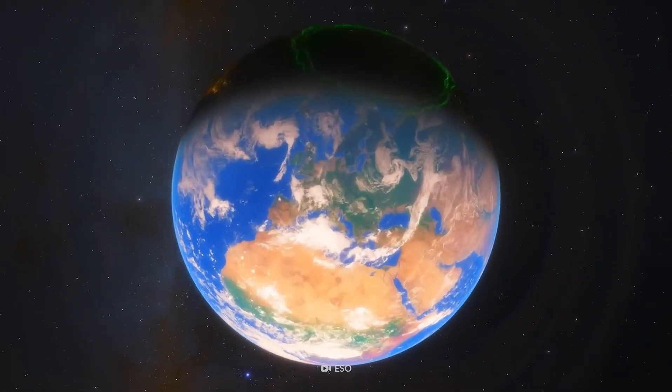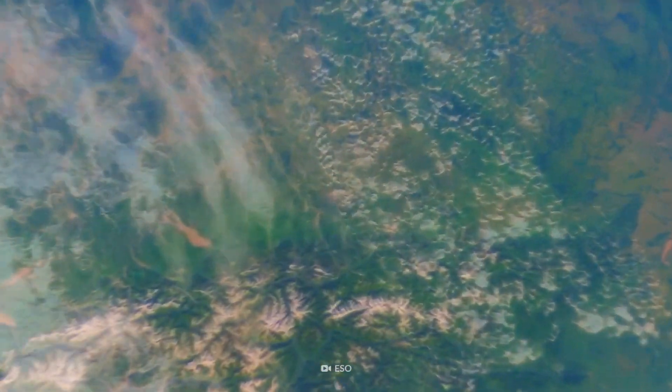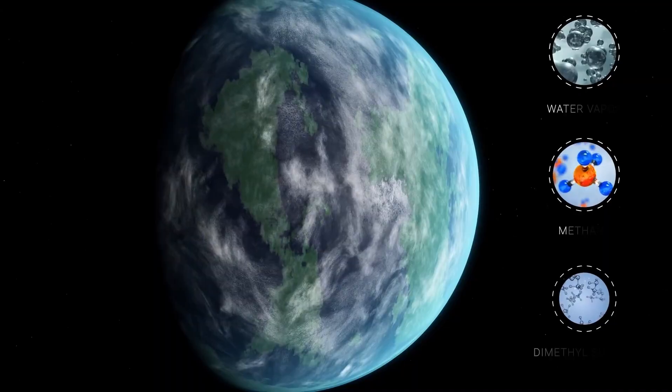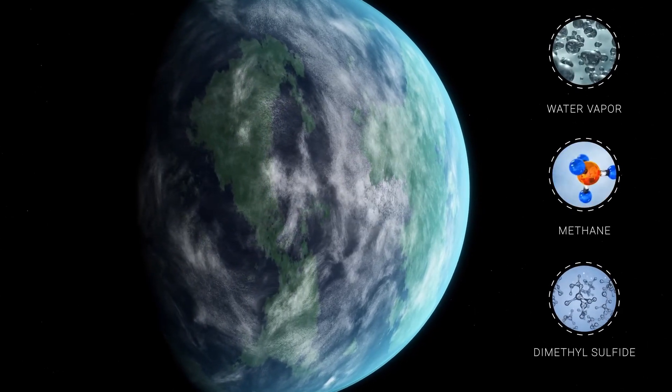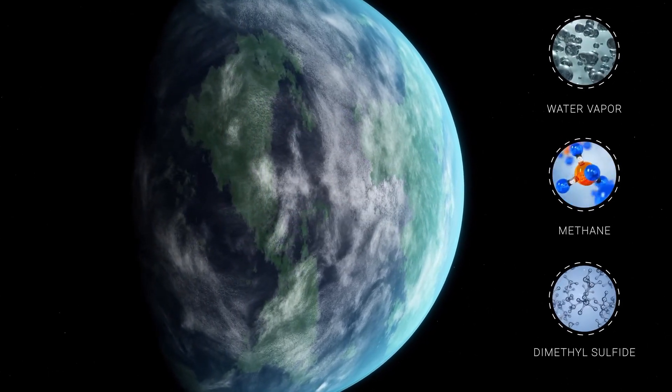Consider, for instance, Earth's axial tilt of 23 degrees. This seemingly random number plays a crucial role in determining the distribution of agriculturally suitable lands.